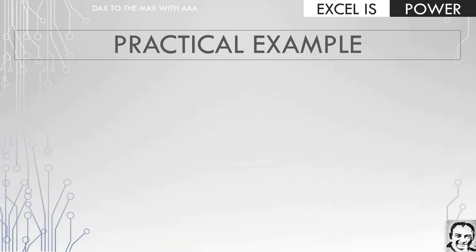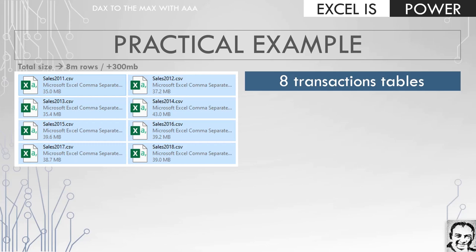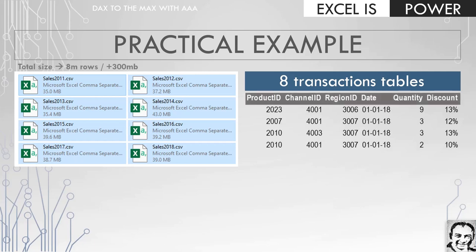Before jumping into Excel, let's have a look at the practical example we have today. In this example, we are going to mash up some tables from different locations inside my laptop in order to make some reports based on this data. We have a folder containing eight CSV files, each containing the sales data for a separate year. We have eight years, 2011 up to 2018, each file approximately 300 megabytes of size and containing around one million rows of data. We can call these eight tables transaction tables because they contain the sales transactions for each year.